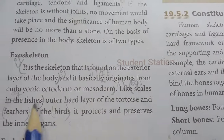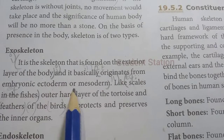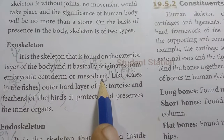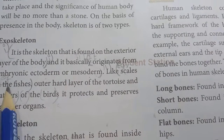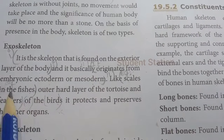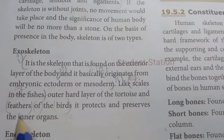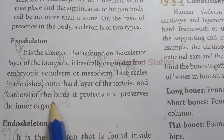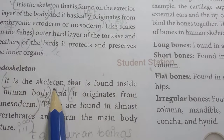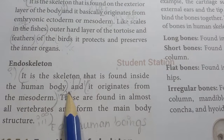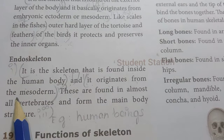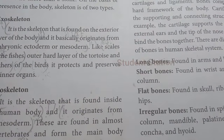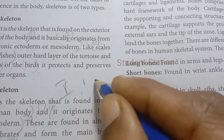Exoskeleton — first point: it originates from embryonic ectoderm or mesoderm. Third point, example: scales in fish and feathers of birds. Endoskeleton — first point: it is the skeleton found inside the human body. Second point: it originates from the mesoderm. Third point, example: human beings. That is the exoskeleton and endoskeleton differentiation.